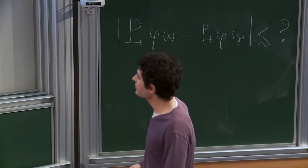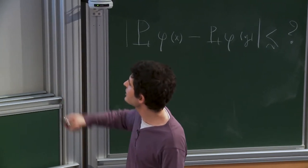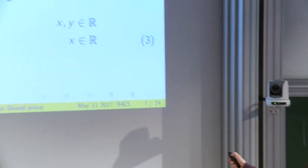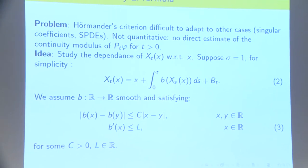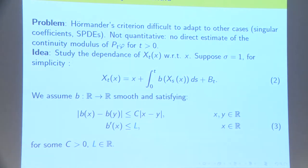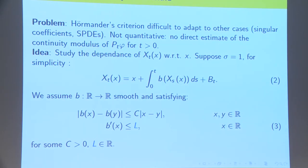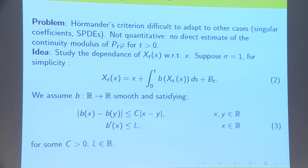To understand this formula, we'll suppose that σ is equal to 1 here, but it's not necessary just to simplify the notations. I'll suppose that B satisfies Lipschitz's bound with the constant C. But the important assumption I'll make is that B satisfies this one-sided bound of the derivative. That is, B' is uniformly bounded by some constant L, which is a real number.